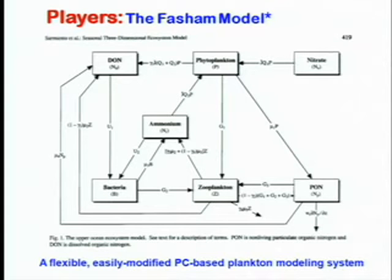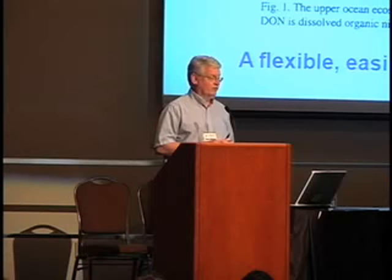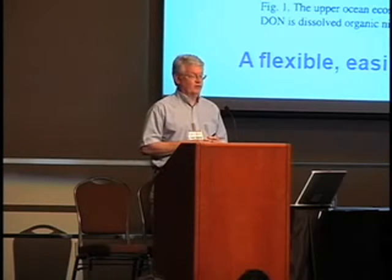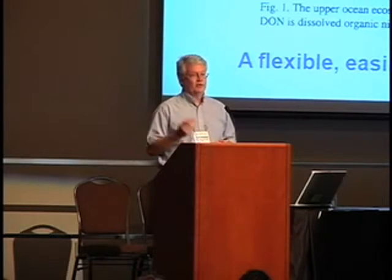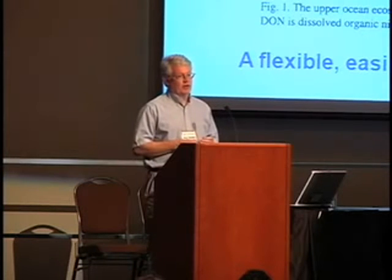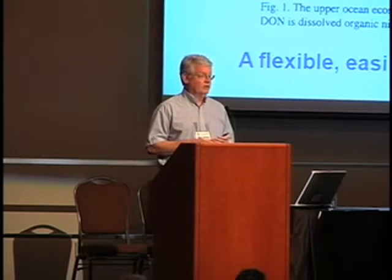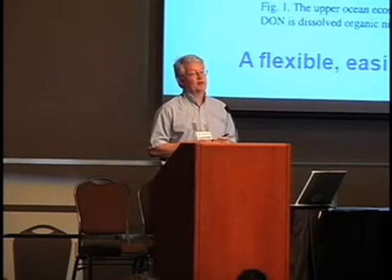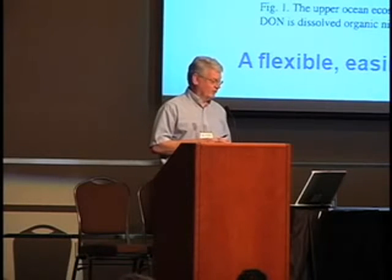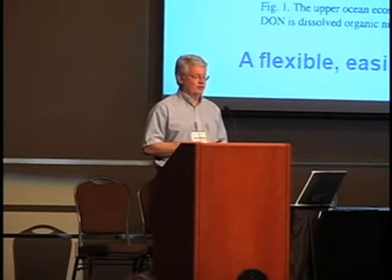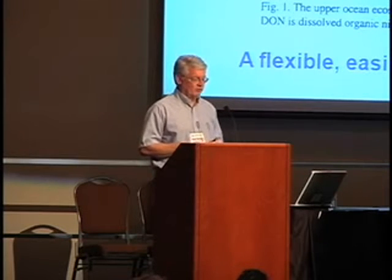That flexibility is an important aspect of why this became an influential model — lots of people could use it, and we distributed it. It's kind of funny: we distributed it on five-and-a-quarter-inch floppy disks, if you remember those. That model is probably still out there in Fortran, but computers can't read those things anymore. It's not just any particular food web structure — it was the whole system.